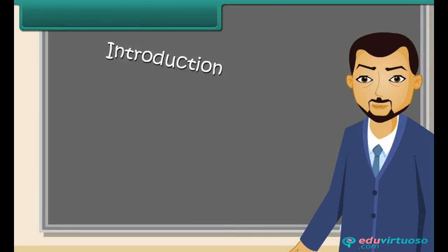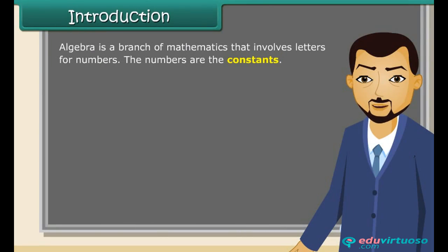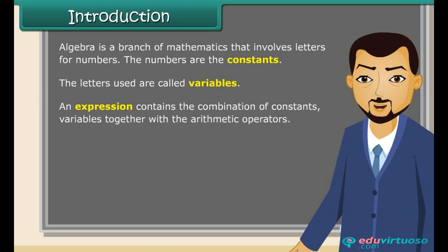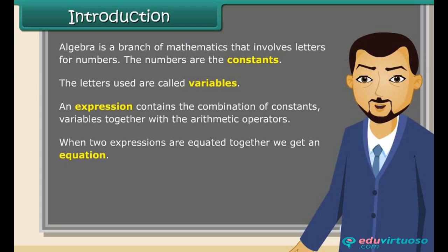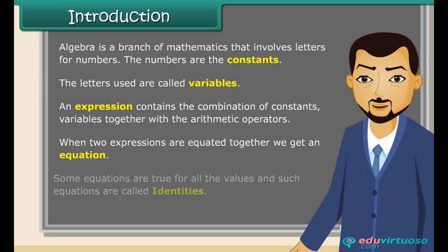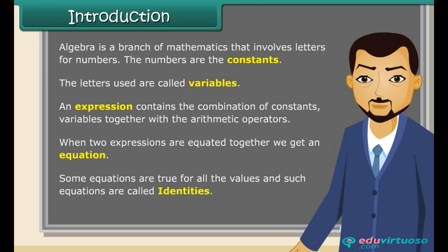Algebra is a branch of mathematics that involves letters for numbers. The numbers are the constants, and the letters used are called variables. An expression contains a combination of constants and variables together with arithmetic operators. When two expressions are equated together, we get an equation. Some equations are true for all values, and such equations are called identities.